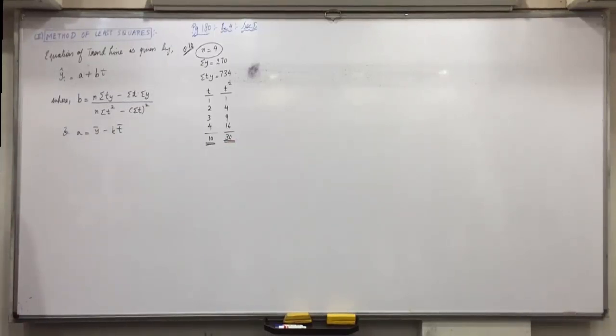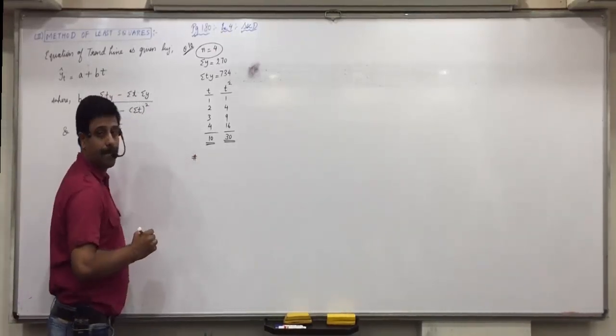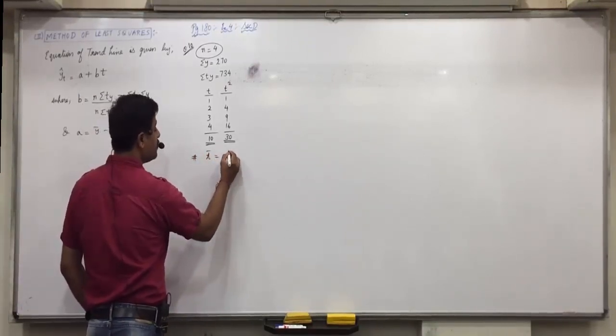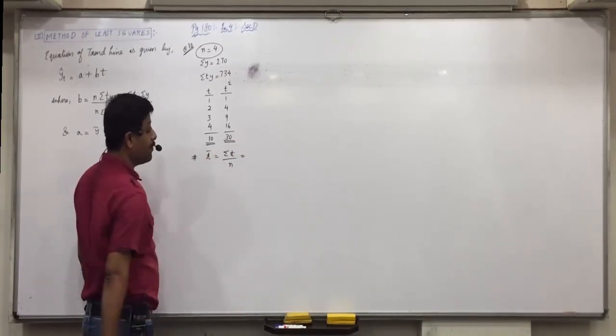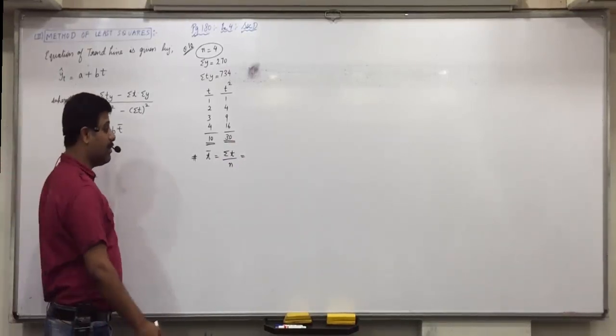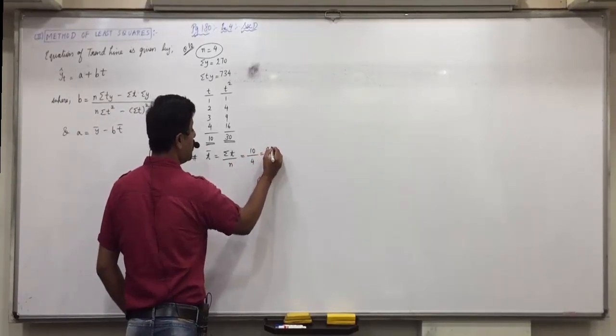Now, we can apply the same pattern to solve it. So, Jani, how will we begin? T bar. T bar. If you don't write the formula, I tell you, base is okay. Be careful. T bar equals to sigma t upon n. Then, 10 upon 4, that is 2.5. Other?